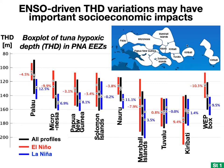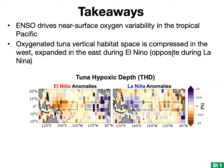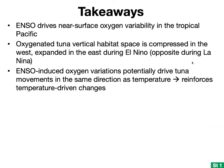Migration of tuna out of EEZ waters into international waters towards the east — when fish try to avoid low oxygen conditions during El Niño years — may also negatively impact government revenues from foreign fishing companies, as well as food security and livelihoods. To summarize: ENSO drives near-surface oxygen variability in the tropical Pacific; oxygenated tuna vertical habitats are compressed in the west and expanded in the east during El Niño, with the opposite during La Niña. ENSO-induced oxygen variations potentially drive tuna movements in the same direction as temperature — pushing tuna eastward during El Niño. ENSO-driven variations in water column oxygen content should therefore be considered in models of habitat quality and tuna catchability.